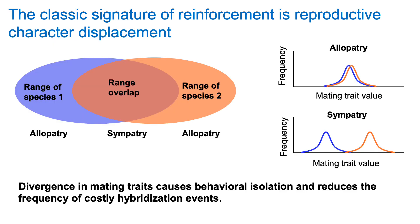The classic signature of reinforcement is reproductive character displacement — this is how we typically diagnose if reinforcement is happening in a given system. On the left I'm showing the hypothetical ranges for species one and species two, each with a region of allopatry where they don't co-occur, and an area of range overlap where they co-occur in sympatry. On the right I'm showing distributions for mating traits: this mating trait value overlaps completely between species in allopatry, but when they co-occur in sympatry this mating trait has been displaced. This divergence causes behavioral isolation — increased preference for mating with members of your own species — and reduces the frequency of costly hybridization events in sympatry.